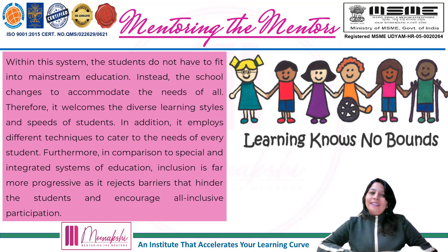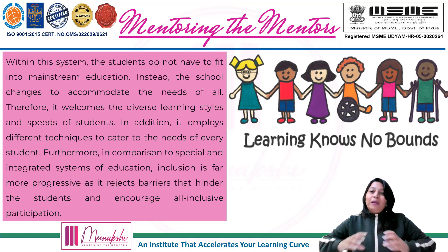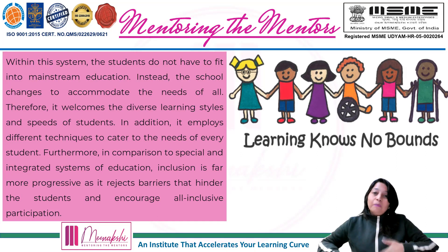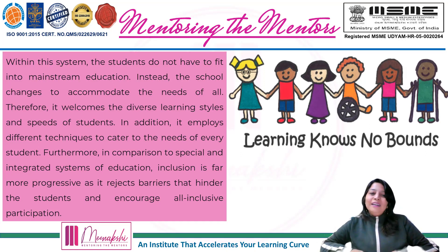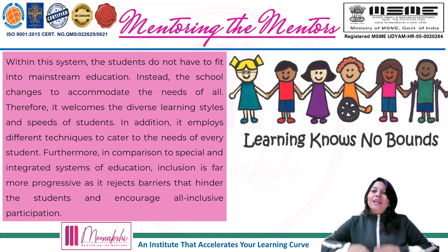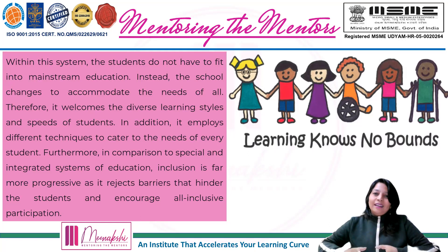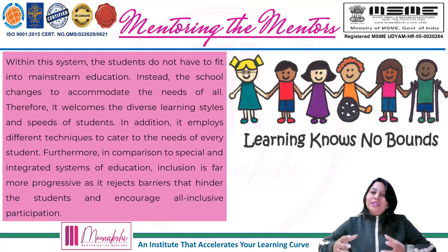Therefore, it welcomes diverse learning styles and speeds of the students. Har ek ki apni speed hoti hai seekhne ki, learn karne ki, samajhne ki — kisi ko video ek baar dekhke samajh mein aa jaata hai, kisi ko do-teen baar dekhna padta hai, pause karke notes bhi lene padte hain, koi screenshot leta hai. The choice is yours — how you wanna go ahead with that. Furthermore, in comparison to special and integrated systems of education, inclusion is far more progressive, as it rejects the barriers that hinder the students and encourages all-inclusive participation. Jab barriers hi nahi rahenge, jab rukawatein hat jaayengi, aapko poore mauke diye jaayenge — tabhi ek individual ki success hogi, aur woh society ki, nation ki, world ki — globally, everybody will be successful.